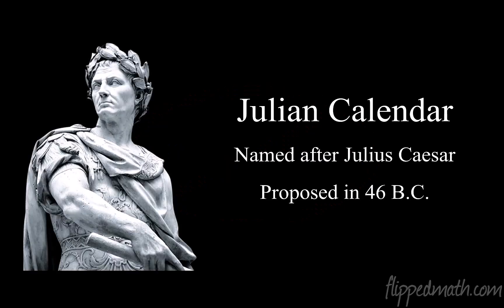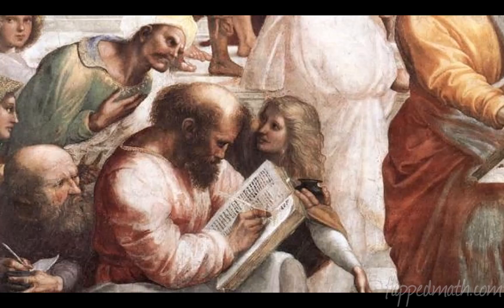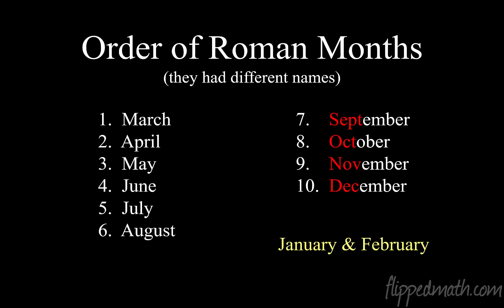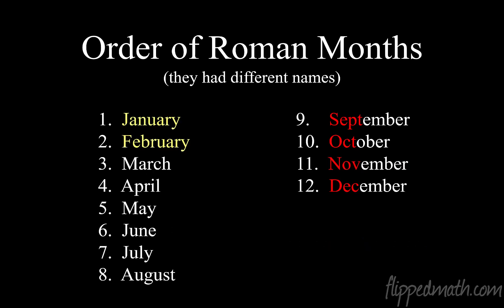Once every four years for a leap year is actually the Julian calendar, named after Julius Caesar. Back in 46 BC he proposed a new calendar system, and his astronomers and mathematicians got to work. Now, the Roman months had different names back then, but something really interesting: they just had 10 months at first. Notice the months on the right — sept, oct, nov, dec — that makes sense: seven, eight, nine, ten, like an octopus. Eventually they added January and February at the beginning of the year, which pushed the other months back. That's why September through December don't match the numbers you'd expect.